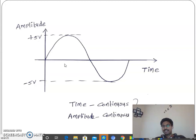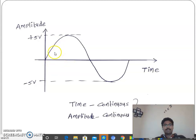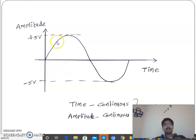Continuous amplitude means there are amplitudes of 0 volts, 0.1 volts, 0.2 volts, 0.21 volts, 0.22 volts — every value is present. At continuous time we have continuous amplitudes. From 0 to 5 volts, this signal contains all values — that is the meaning of continuous time and continuous amplitude.